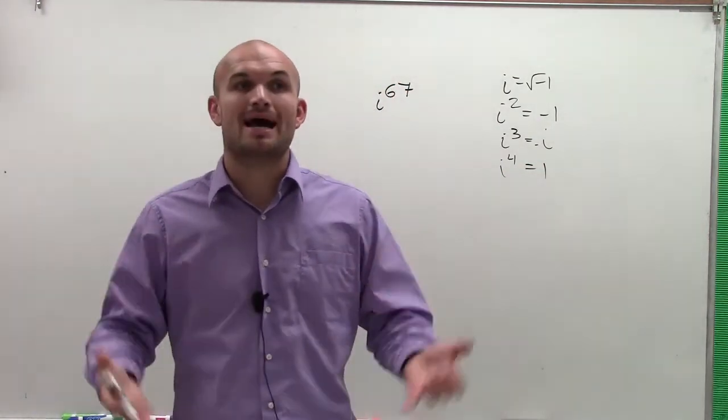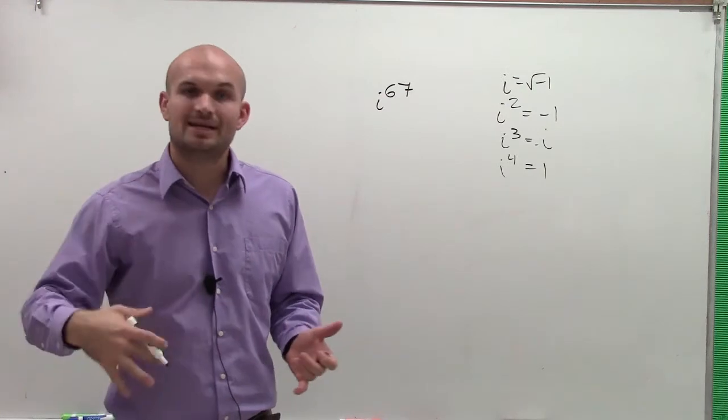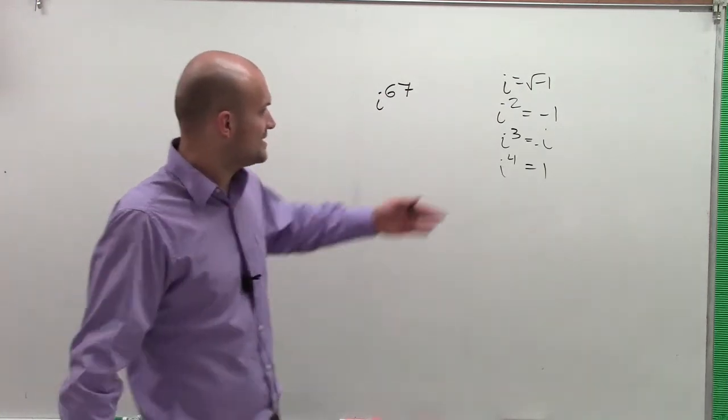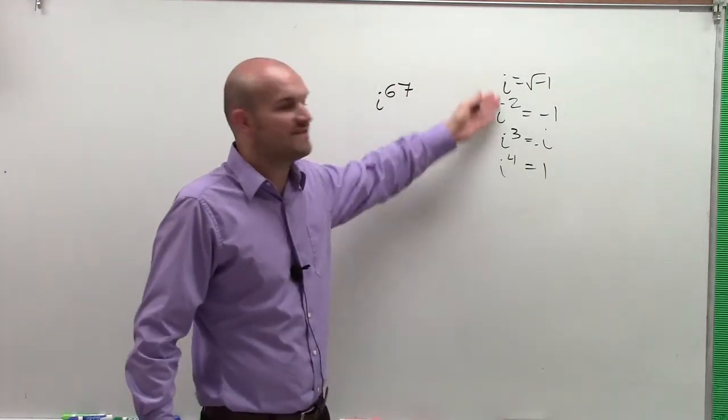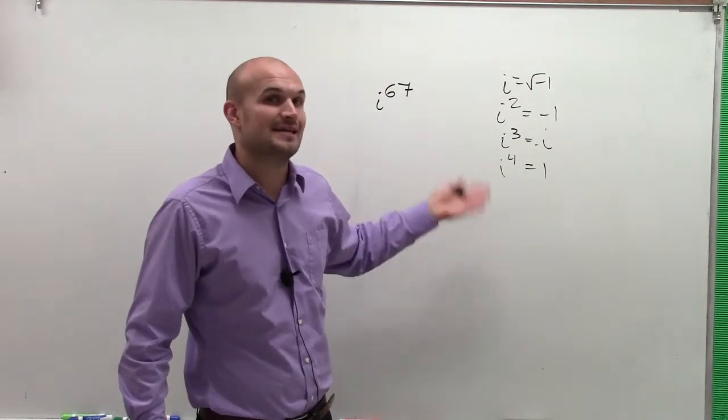And what we notice is when we kept on multiplying by i, this actually repeated. And so there's four distinct values for i, but after that it keeps on repeating.